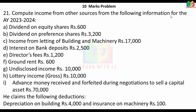Next problem: Compute income from other sources from the following information for the assessment year 23-24. Dividend on equity share Rs.600, dividend on preference share Rs.3,200, income from letting of building and machinery Rs.17,000, interest on bank deposit Rs.2,500, director fee Rs.1,200, ground rent Rs.600, undisclosed income Rs.10,000, lottery income Rs.10,000, advance money received and forfeited during negotiation to sell a capital asset Rs.70,000. Deductions claimed: depreciation on building Rs.4,000 and insurance on machinery Rs.100.